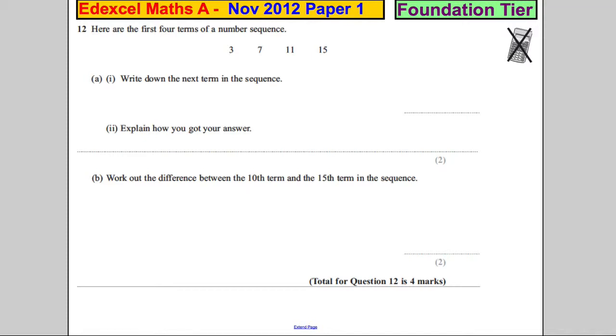Question 12. Here are the first four terms of a number sequence: 3, 7, 11, 15. Write down the next term.